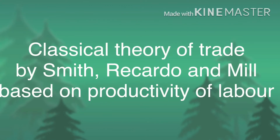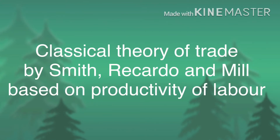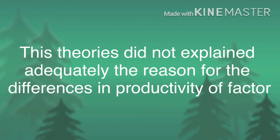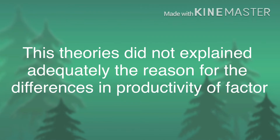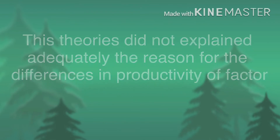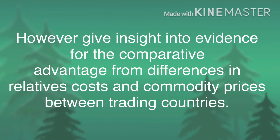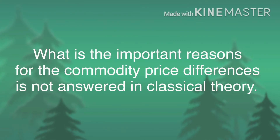The classical trade theories developed by Adam Smith, Ricardo, and J.S. Mill were based on the differences in the productivity of labor, or a single factor. This theory failed to provide an adequate explanation for why there are such differences in the productivity of labor. From this theory we can get an insight like relative cost differences or relative differences in commodity prices between two trading countries as evidence of their comparative advantages.